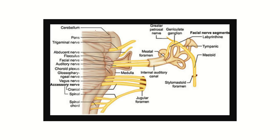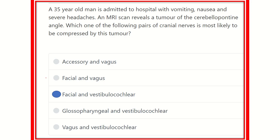In this picture we can see the cerebellum, the pons, and the angle between them. From this angle, two nerves arise: one is the facial nerve and the other is the vestibulocochlear nerve — also known as the auditory nerve. So our answer is the facial and vestibulocochlear nerves, located at the cerebellopontine angle.